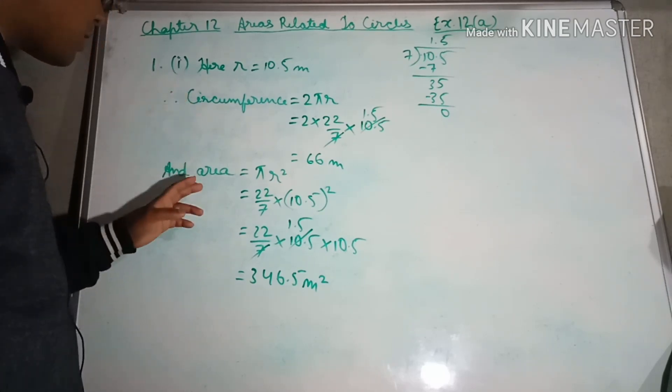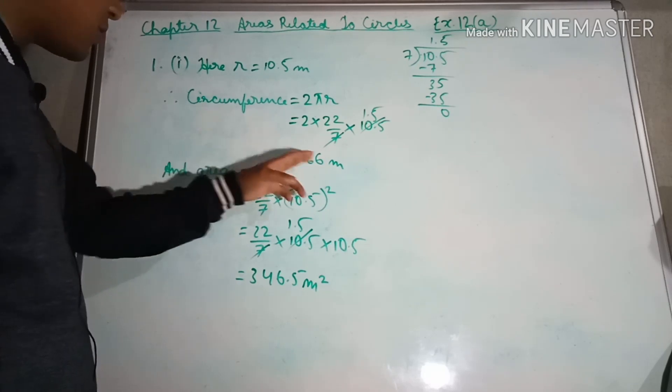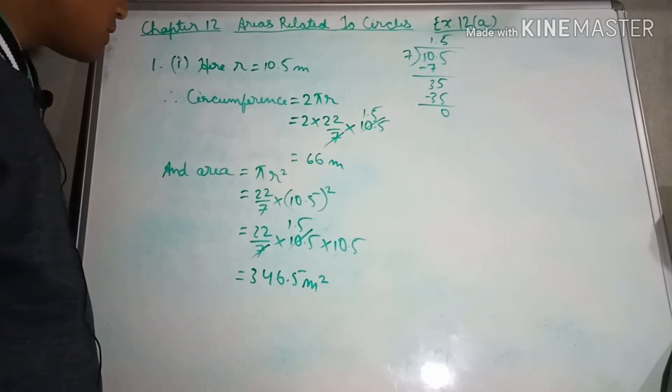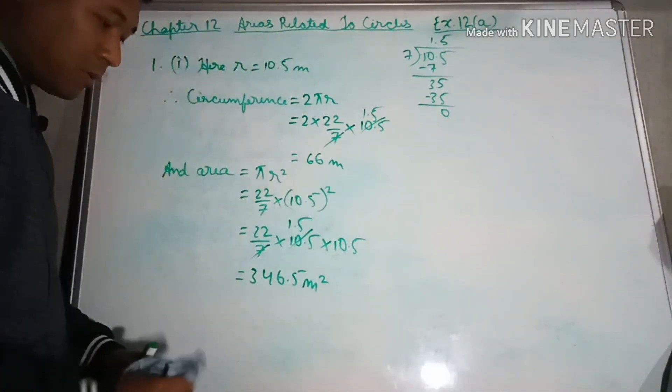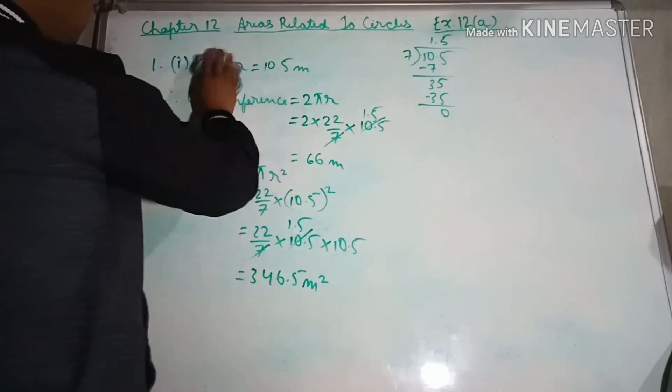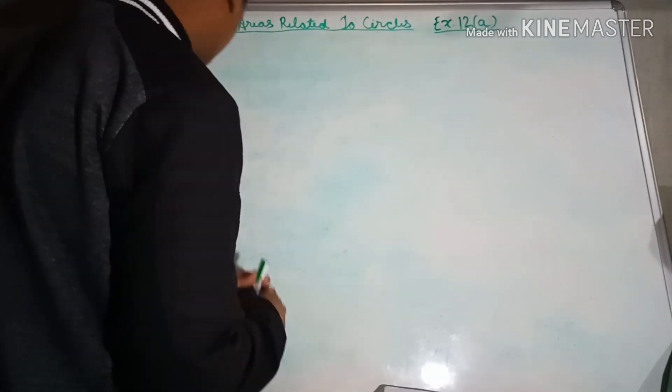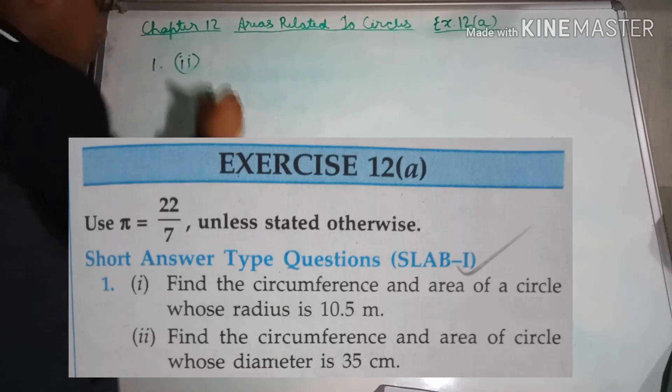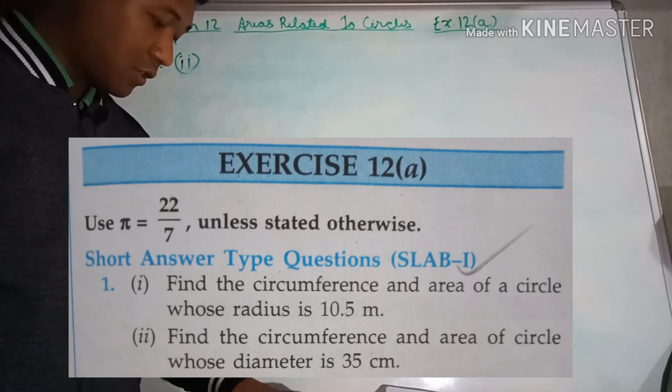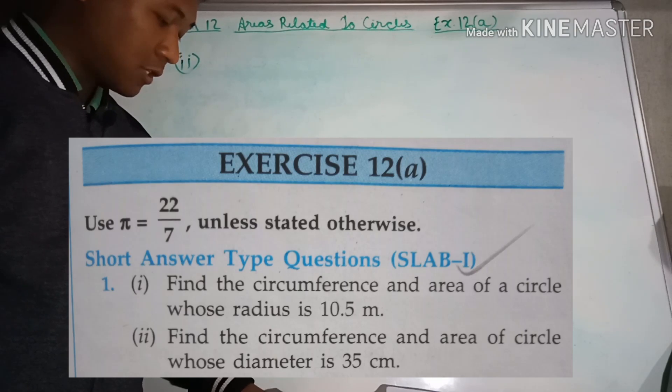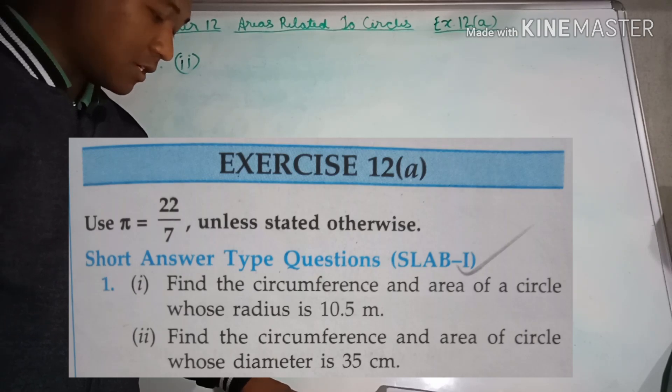Question 1, part ii: Find the circumference and area of circle whose diameter is 35 centimeters. The diameter is 35 centimeters.